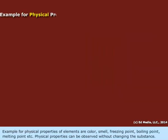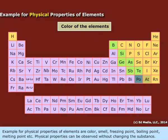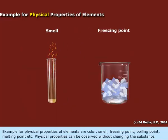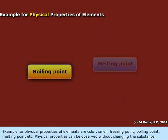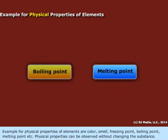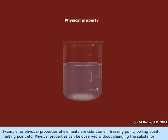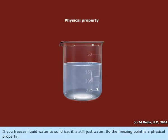Examples for physical properties of elements are color, smell, freezing point, boiling point, melting point, etc. Physical properties can be observed without changing the substance. If you freeze liquid water to solid ice, it is still just water. So the freezing point is a physical property.